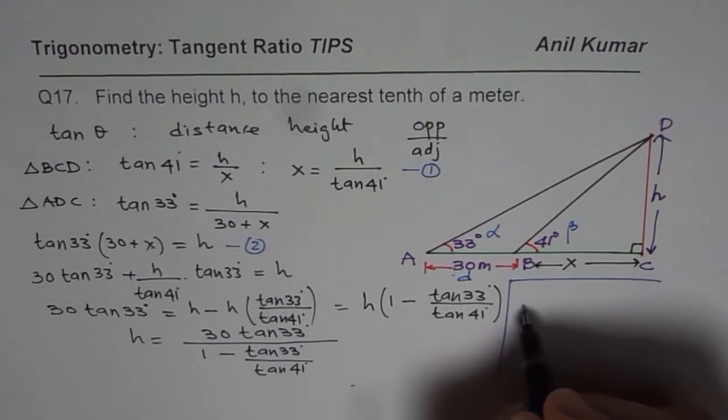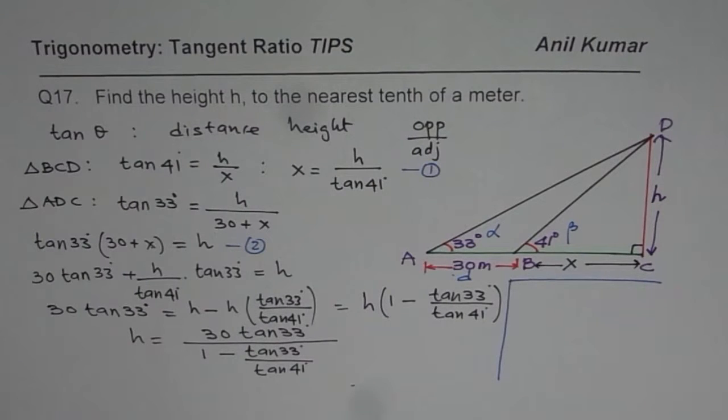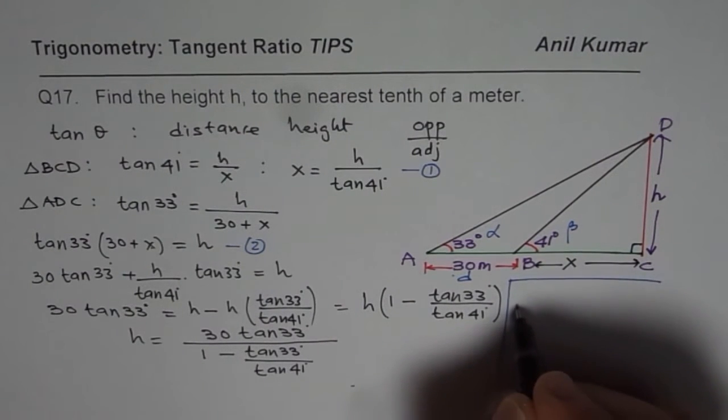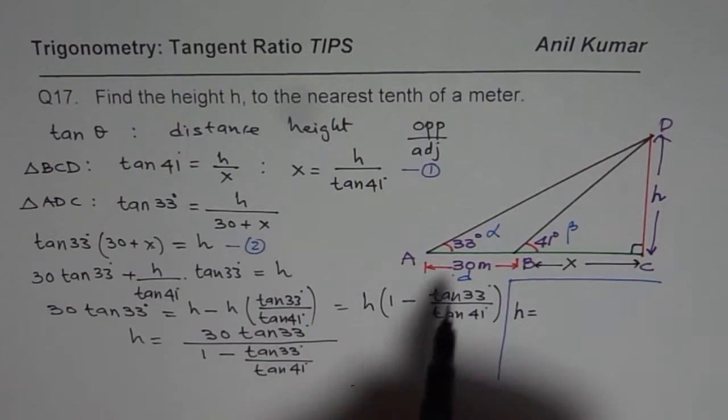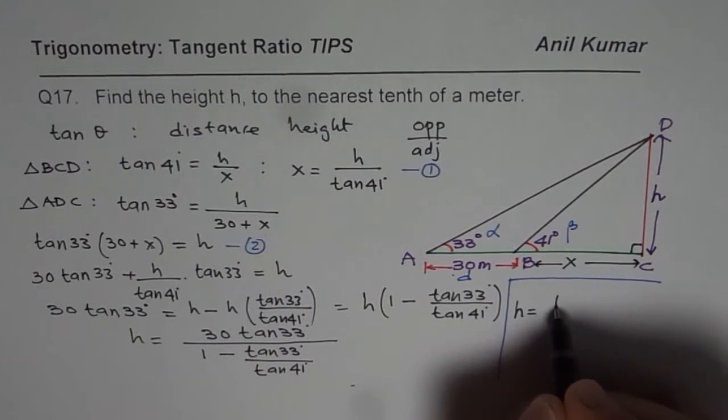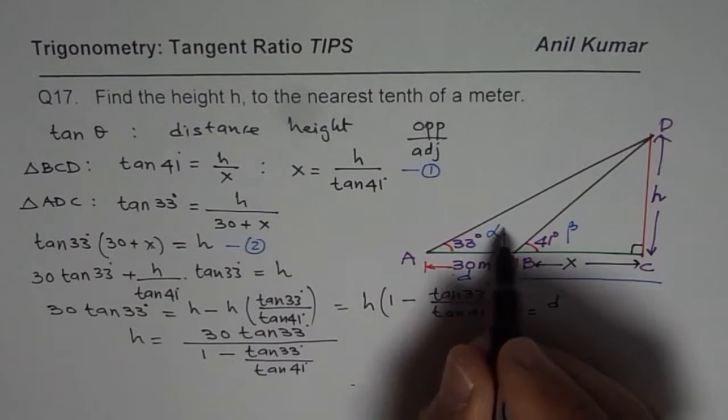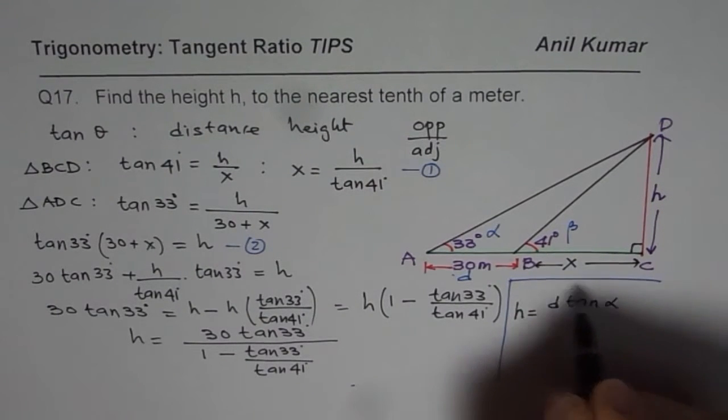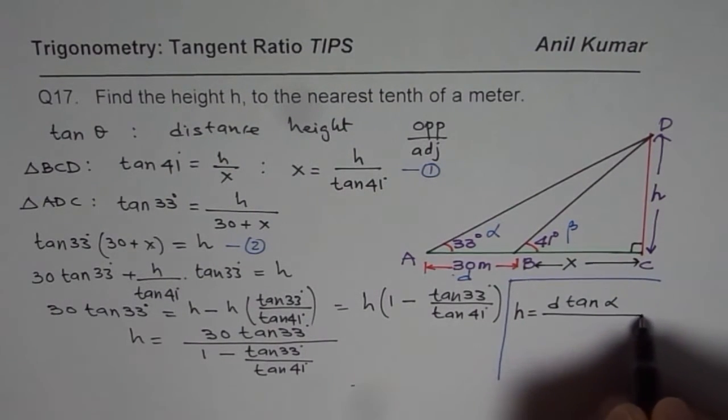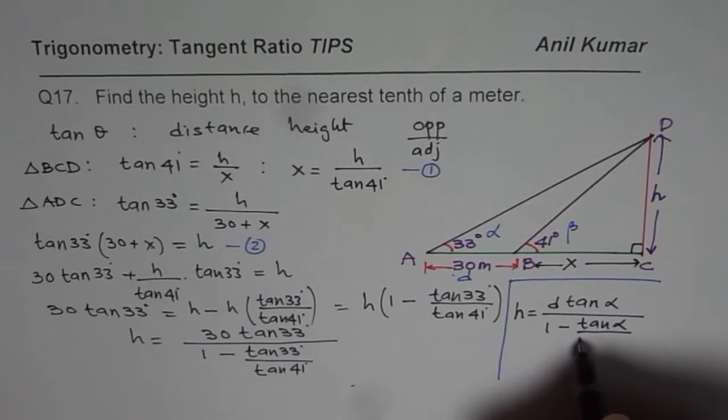Let me write in black and circle it. We can write h equals D times tan α (the outside angle) divided by [1 - (tan α)/(tan β)].